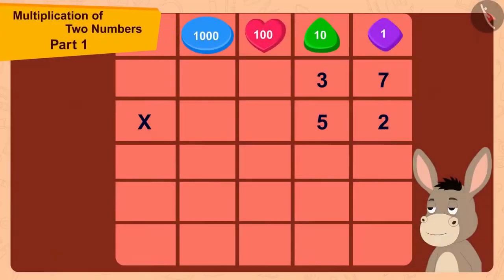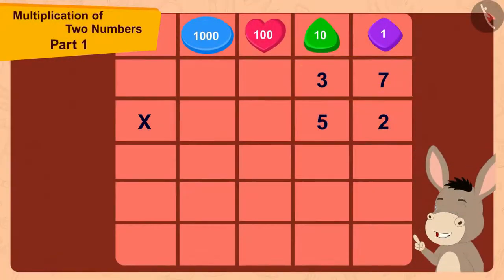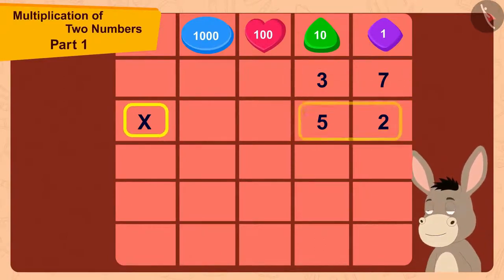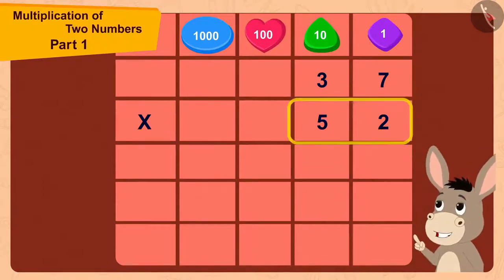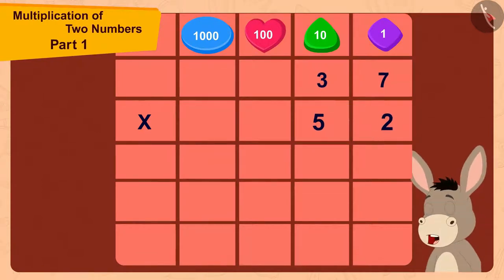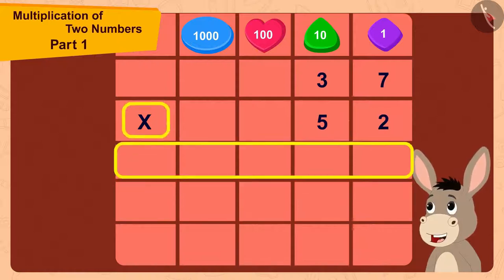Here, the two-digit number 37 is being multiplied by the two-digit number 52. And because 52 is a two-digit number, I can multiply 37 with 52 in two steps.